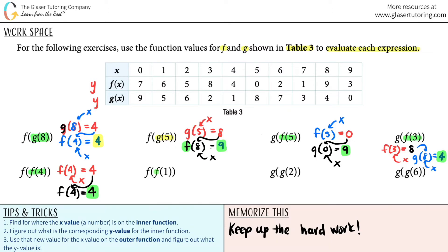Next one, f of f of 1. f of 1 is the inner function. f of 1, and that is the x value. So 1 over here on the x. They're telling me that it's an f function, so I go down to the f function, which is 6.